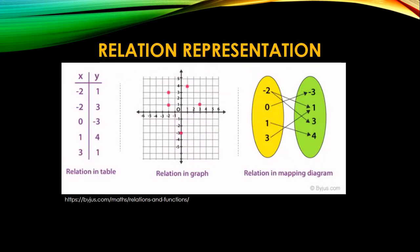So these are the relation representations. We can use the tabular form in representing the relation. So we have here the input X and the output Y. We also have here the second drawing or picture is the graph. So we can graph those ordered pairs in a relation. And the third image is a mapping diagram or an arrow diagram.